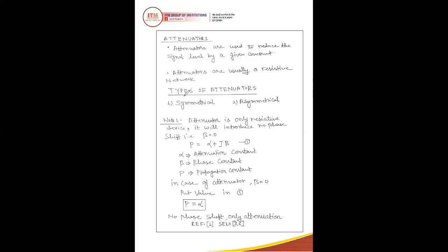There are two types of attenuators: symmetrical and asymmetrical. How can we identify whether an attenuator is symmetrical or asymmetrical? Because an attenuator has two ports — one is the input port and another is the output port. If there is perfect matching, meaning input impedance equals output resistance (Rin = Rout), the attenuator is symmetrical. If Rin is not equal to Rout, then the attenuator is asymmetrical.